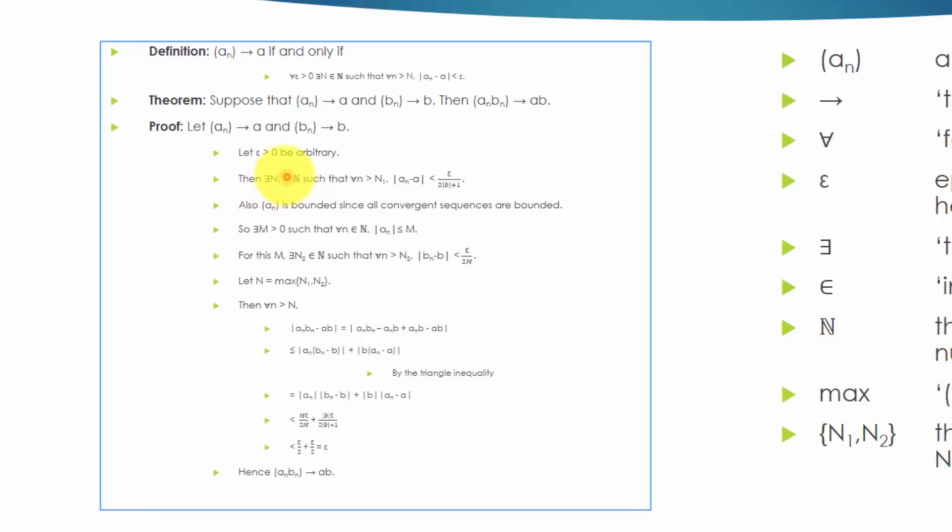Then there exists a natural number N1, such that for every small n greater than N1, the absolute value of A-N minus A is less than epsilon over 2 times the absolute value of B plus 1.